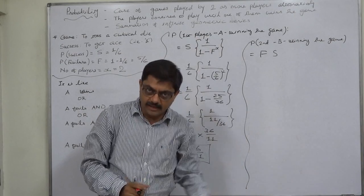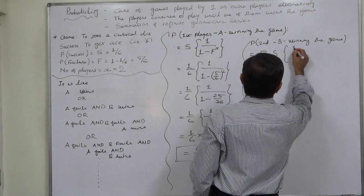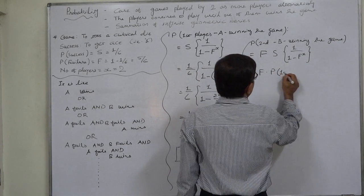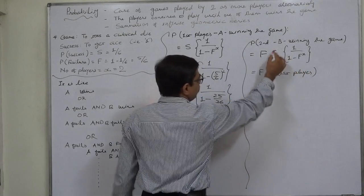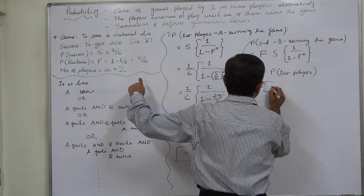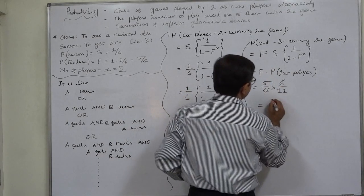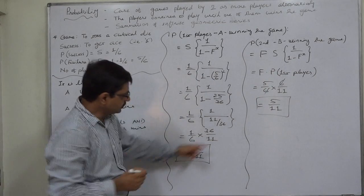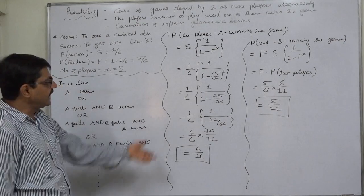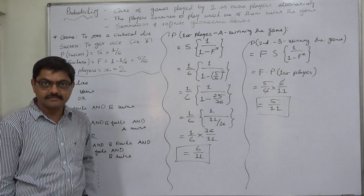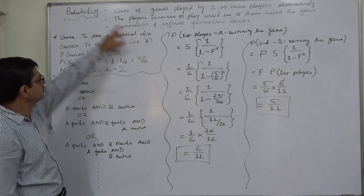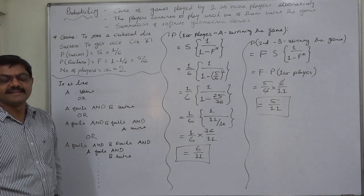We can verify the second player's probability using the formula directly: when the first player fails, B effectively becomes the starting player. So probability of B winning = F × (probability of first player formula) = (5/6) × (6/11) = 5/11. The sum of these two probabilities is one, confirming they are mutually exclusive and exhaustive cases. In this way we can solve this kind of problem for any number of players. Thank you very much.